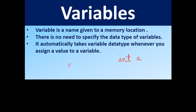For example, if I type A equals to 10, it is quite understood that this is an integer value — the Python interpreter automatically takes it as an integer. Similarly, if you take B equals to any string within quotation marks, like 'A, B, C', Python will assume that this is a string type variable.